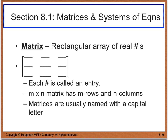We use a notation. An entry is what each number is called in our matrix. The first entry is going to be A sub 1,1 — the first number represents the first row, and the second represents the first column. So A sub 1,2 would be the first row, second column, and A sub 1,3 would be the first row, third column.